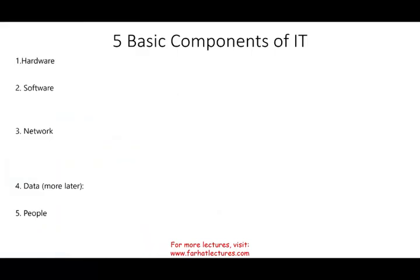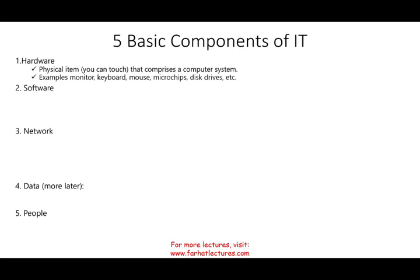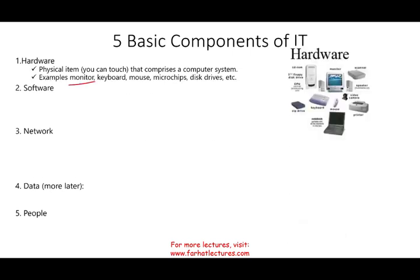There are five basic components of IT. The first is hardware — physical items you can see and touch that comprise a computer system. Examples include printers, zip drives, keyboards, a mouse, a video camera, and the monitor. Everything you can touch is called hardware.